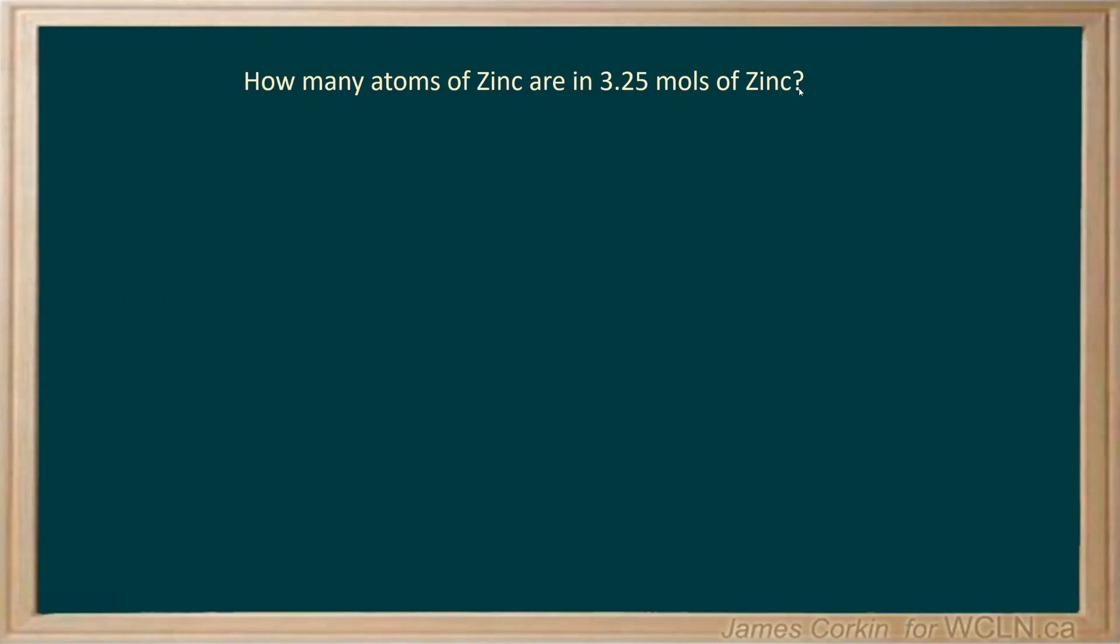In this question we are asked how many atoms of zinc are in 3.25 moles of zinc. You want to start by identifying what the question is asking you to find. Remember, start a calculation with the number having the simplest units wherever possible. In this case, we're only given one number, 3.25 moles.